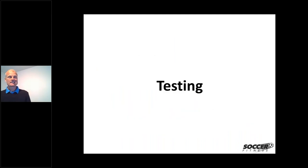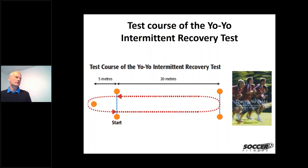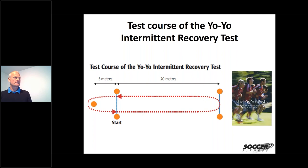Testing is a very useful tool to understand the actual level of players at the moment. One widely used test that is very closely related to game performance is the yo-yo intermittent recovery test. In this test you run 20 meters in one direction and 20 meters back, then have a 10-second rest before the next signal. The signals come faster and faster, meaning speed must increase until the player can no longer maintain the required pace and has to stop.